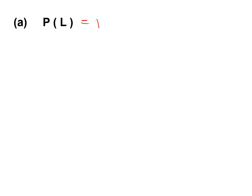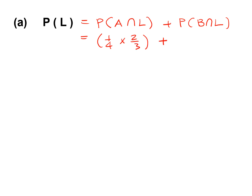To find P(L), the probability of being late on a particular day, we use: P(L) = P(A intersect L) + P(B intersect L). So that is 1 over 4 times 2 over 3, plus 3 over 4 times 1 over 3, which gives 5 over 12.